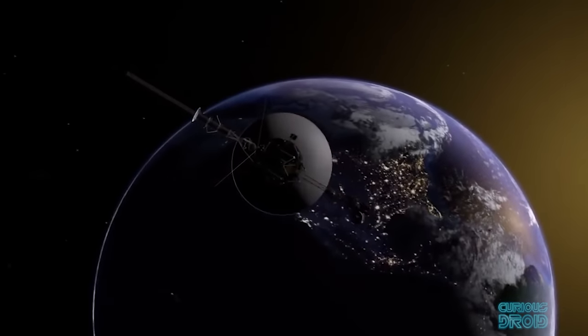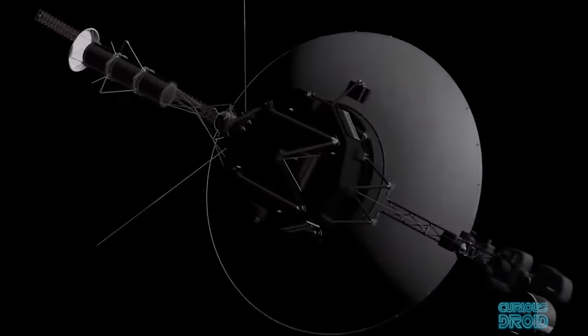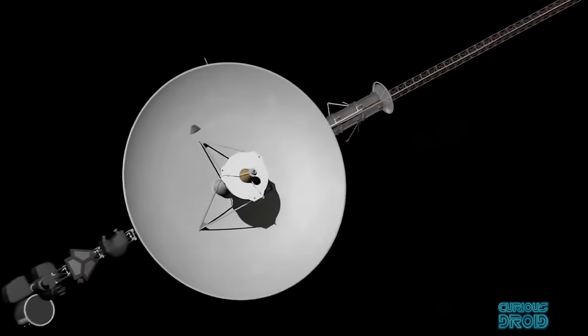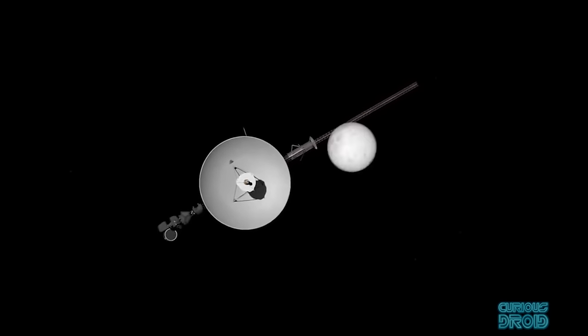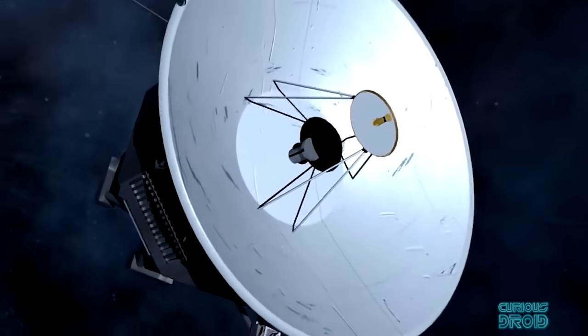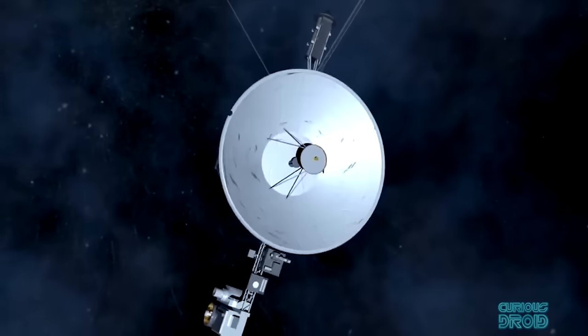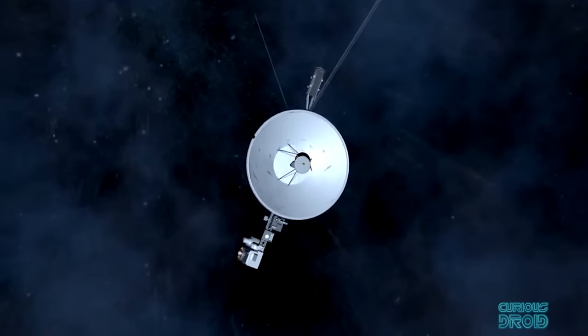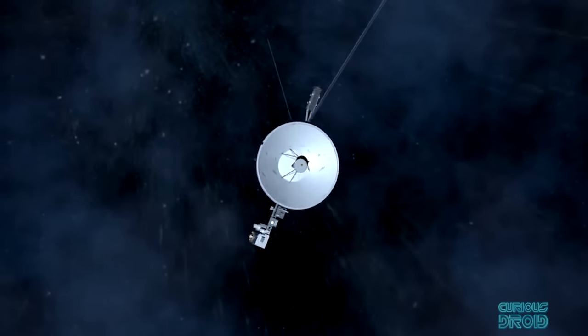How does a space probe like Voyager 2, which was launched in 1977, visit the four outer planets and travel over 17 billion kilometers over a span of 40 years with almost nothing in the way of fuel?